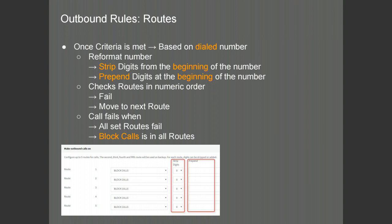The PBX will provide you with five outgoing routes — five different possible routings of the call. The PBX will check these in numerical order. If the first route fails for any reason, whether the provider is busy or unavailable, the call will move to the next route. A provider being busy may mean there are no available channels on that trunk, or the provider returns an error message. Being unavailable means the PBX cannot reach the provider for any reason. A call will fail when all set routes fail, or you have defined this rule as a blocking rule with all routes set to block call.